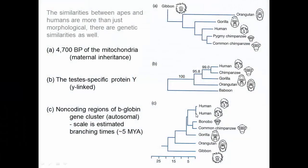Continuing our discussion of human evolution: when we compare apes and humans, we see differences that are more than just morphological. There are genetic similarities as well, and in fact if we use the genetic similarities to try to create the phylogenies or estimate the phylogenies of the great apes, we get remarkably consistent patterns.